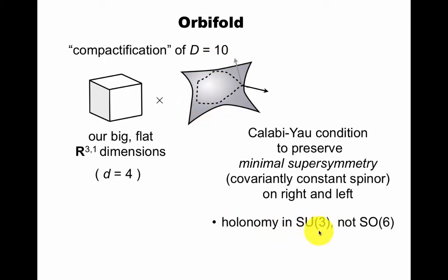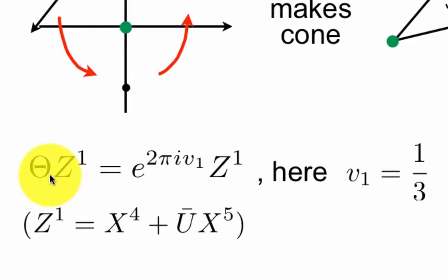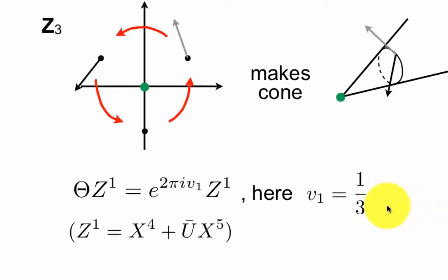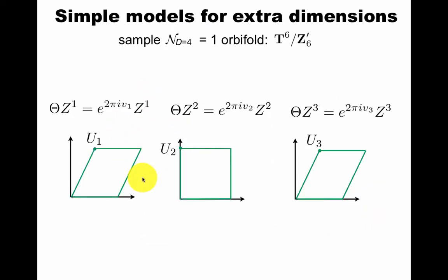And the simple model I had was that you do that by, for example, identifying by rotation of 120 degrees. Identification makes a cone, has non-trivial holonomy, and the orbifold operator is something that acts on complexified combination of coordinates with this phase. Here v1 is a third, so that corresponds to 120 degree rotations. Here's a sample N equals 1 orbifold, and I will say now what it means for it to be N equals 1.